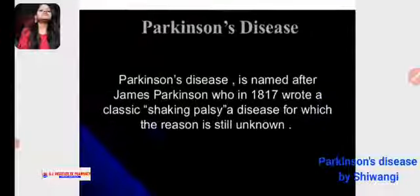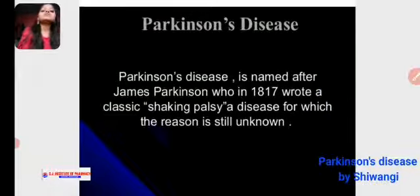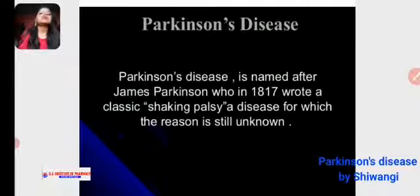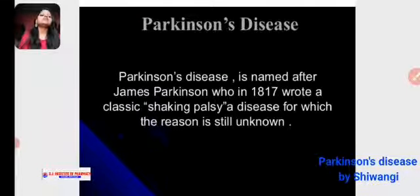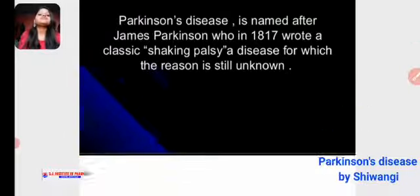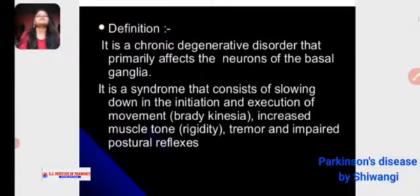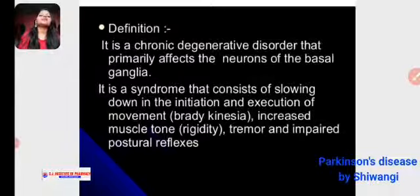What is Parkinson's disease? Parkinson's disease is named after James Parkinson, who in 1870 wrote a classic work on it. It is a disease for which the reason is still unknown. By definition, it is a chronic degenerative disorder that primarily affects the neurons of the basal ganglia.